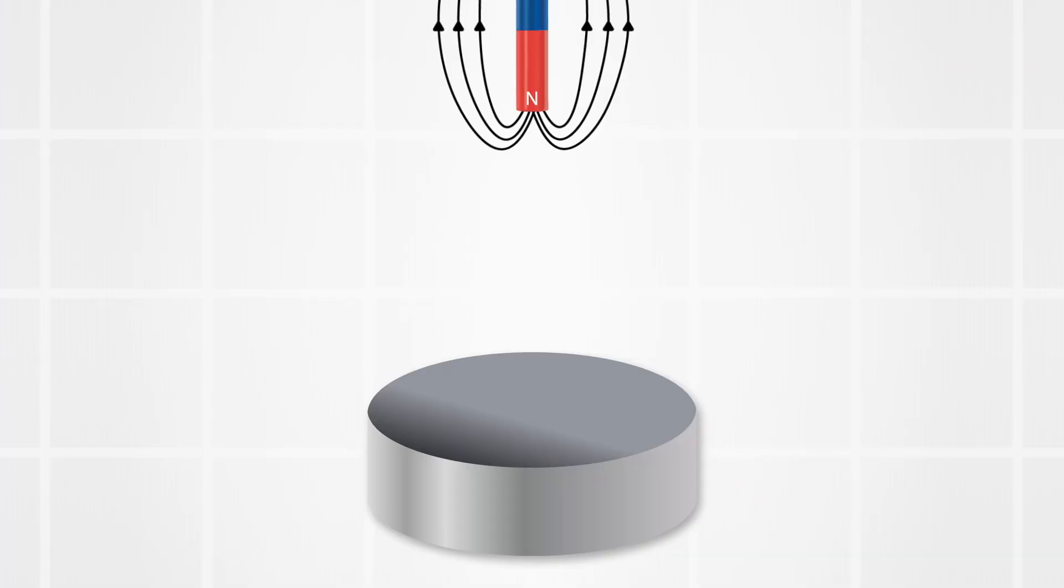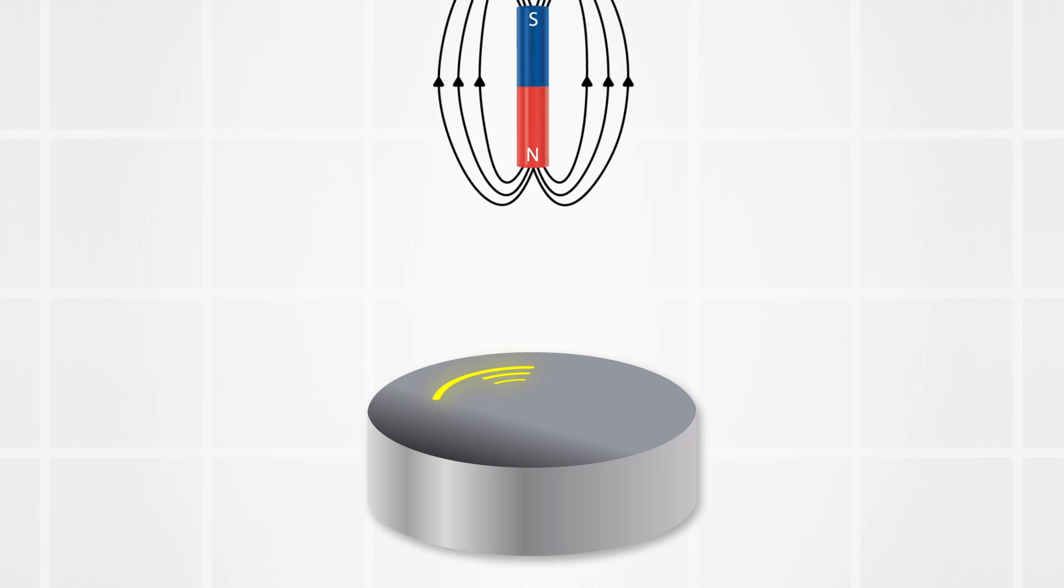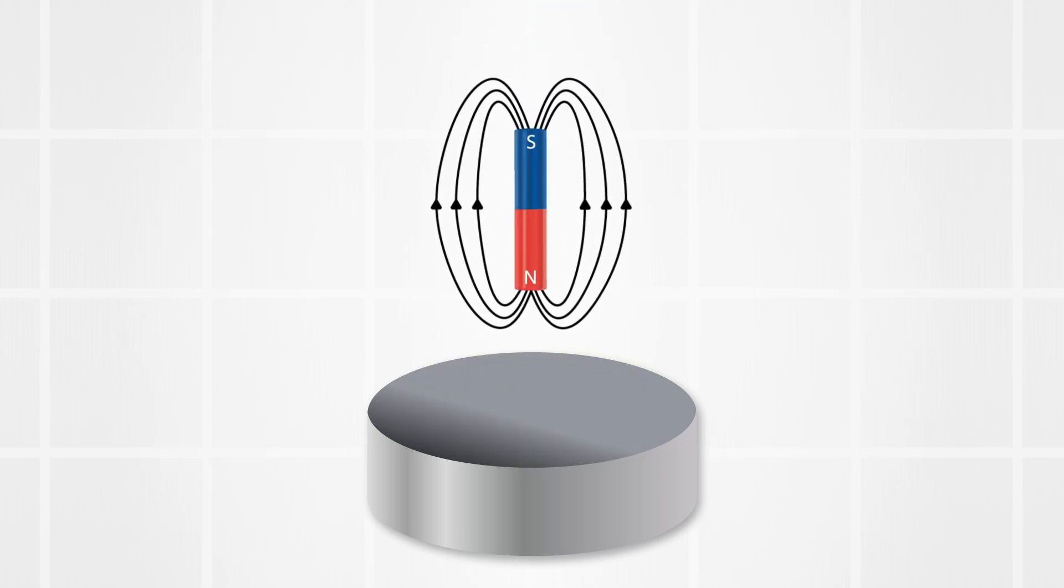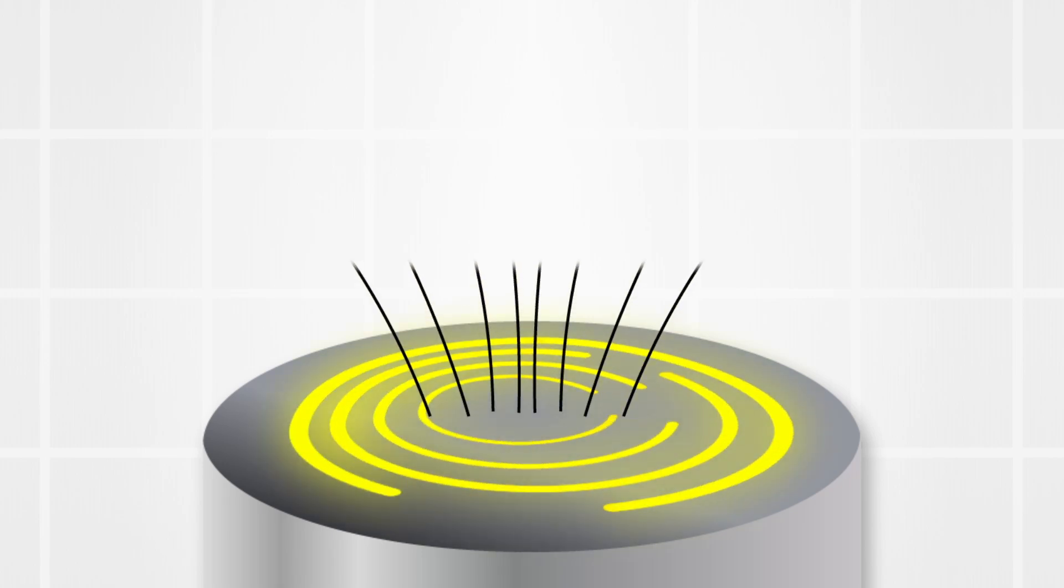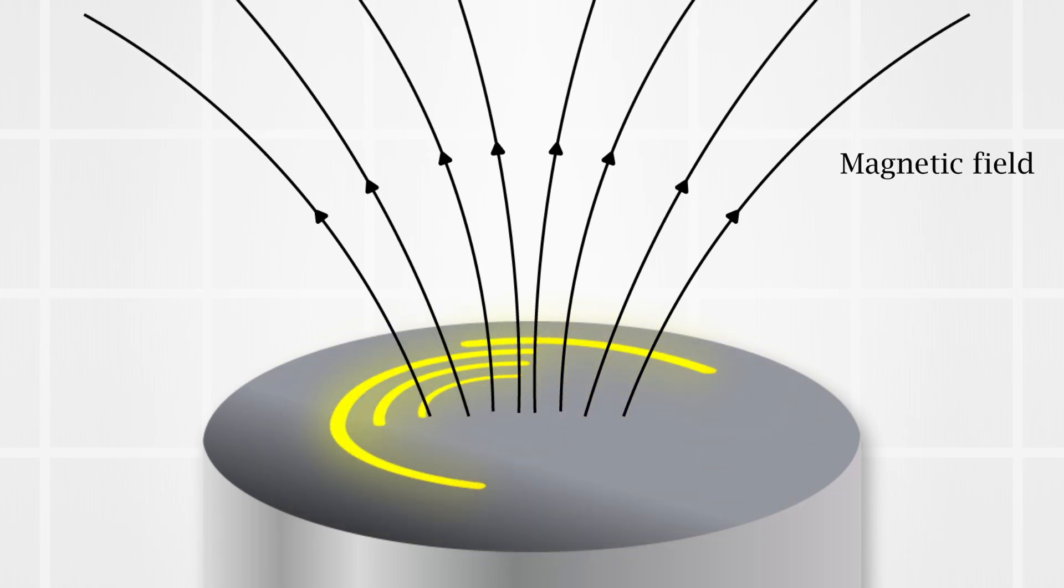One simple way of looking at it is the following. As you bring a magnet close to a metal, this will induce eddy currents that oppose the change in magnetic field. In normal metals, these decay rapidly. But in perfect conductors, these currents will keep increasing in strength until they match the external field. Perfectly cancelling it and never decaying.